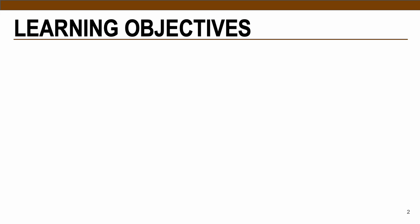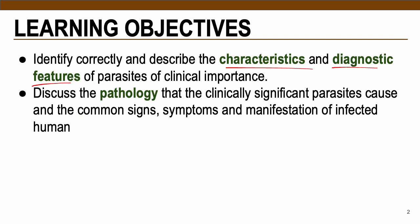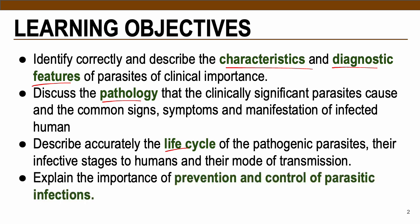Here are the learning objectives for this topic. The first is to correctly identify and describe the characteristics and diagnostic features of parasites with clinical importance, covering morphology at a brief level with extensive discussion reserved for the laboratory. Next is to discuss the pathology — the diseases that each parasite causes — describe the life cycle from egg to adult worm, and discuss the importance of treatment, prevention, and control of parasitic infections.